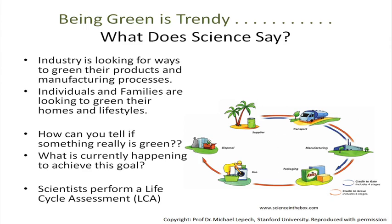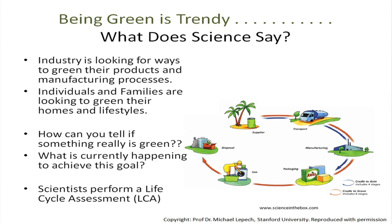What does the science say? Green is trendy — it is fashionable, people feel good about green products. Industry is looking for ways to green their products and manufacturing processes; individuals and families are looking to green their homes and lifestyles. There are many websites that can help you calculate your own carbon or environmental footprint based on how you live, and you can then modify your lifestyle to reduce it. So how can you tell if something is really green? To answer that scientifically, we perform a life cycle assessment.